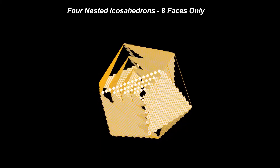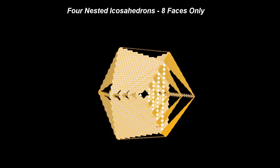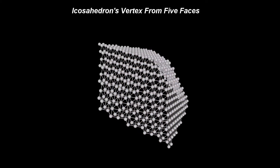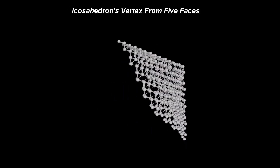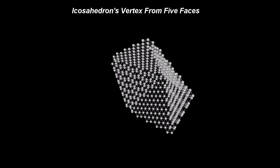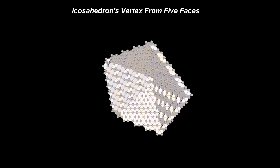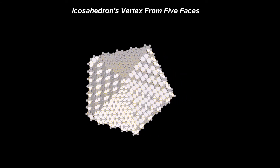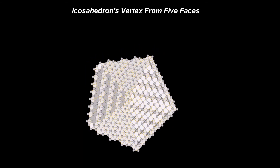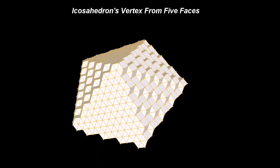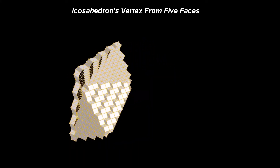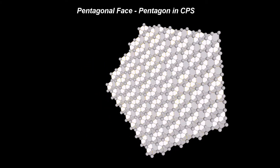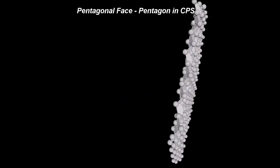The edges of the icosahedron can be imagined as the connections between the centers of the dodecahedron's 12 faces. Inversely, the faces of the dodecahedron develop around the vertices of the icosahedron, and the intersections of these surfaces define the edges of the dodecahedron. Pentagonal faces are found as bases of the pentagonal pyramids, obtained by cutting the icosahedron with planes under the corresponding angles.